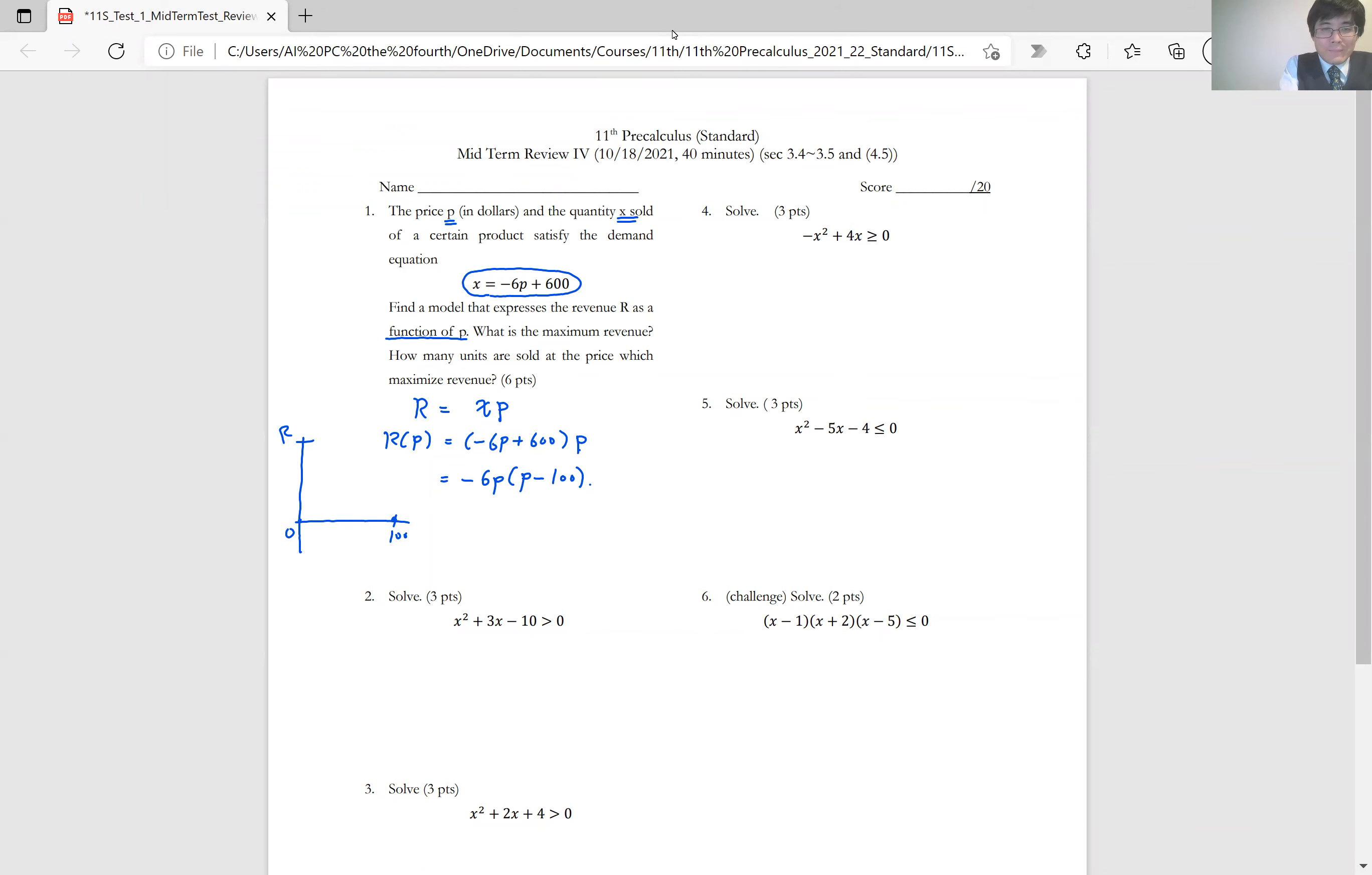Because the leading term is negative 6p squared, it's going to be a concave down parabola where the maximum is obtained in the midpoint of these two intercepts, which is 50. So the maximum revenue is the value of the revenue at p equals 50. And that is negative 6 times 50 times 50 minus 100.